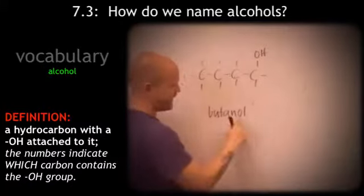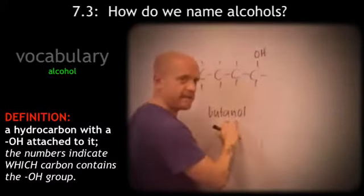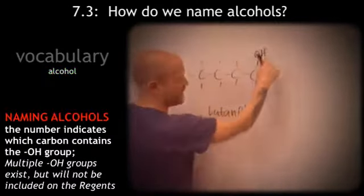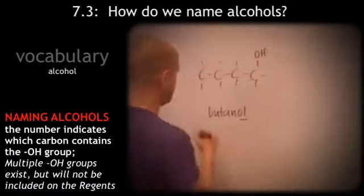So we have butane-ol. It's still an alkane, so it's going to have the A-N ending. And it has an O-L because it's the OH group. So this is 1-butanol.